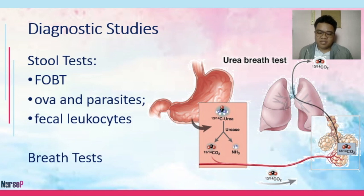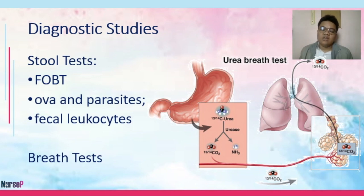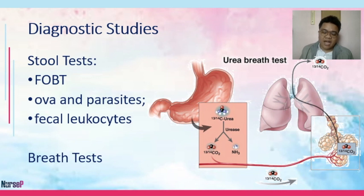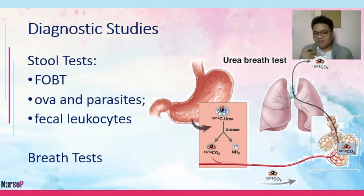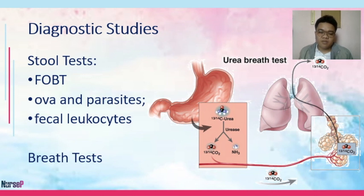In the past, patients were instructed to avoid red meat, ASA (aspirin), NSAIDs, and vitamin C before the fecal occult blood test, though these recommendations are now outdated per medical-surgical nursing textbooks. Fecalysis checks for the presence of ova and parasites due to intestinal parasitism concerns. We also check for fecal leukocytes — the presence of WBCs — which would indicate severe GI infection.